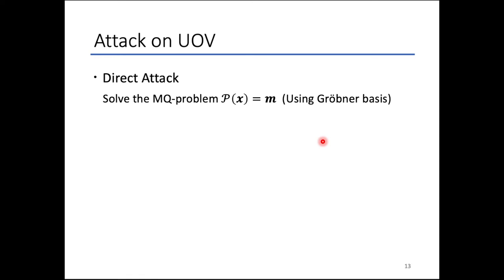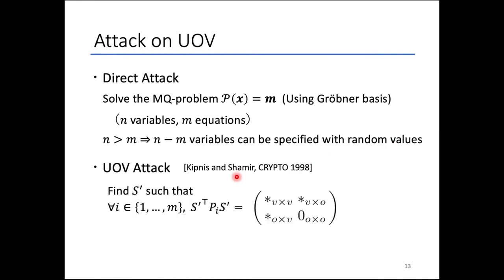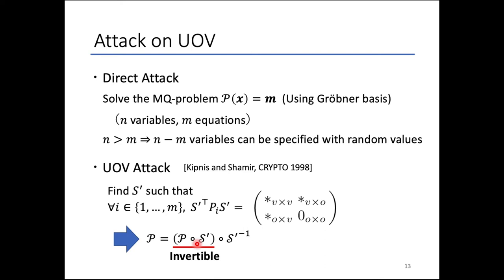Next, I'll explain the attacks on UOV. The direct attack algebraically solves the system Px equals M. In the case of UOV, the number of variables N is generally larger than the number of equations M, so N minus M variables can be specified with random values. Then we can execute the direct attack on a system of M variables and M equations. On the other hand, the UOV attack finds a linear map S' such that every S'-transpose times Pi times S' becomes a specific form. When we obtain such an S', the public key map P can be changed into P composed with S', and then P composed with S' is invertible by the same way as central map F of UOV, so attackers can generate a signature without having the secret key.